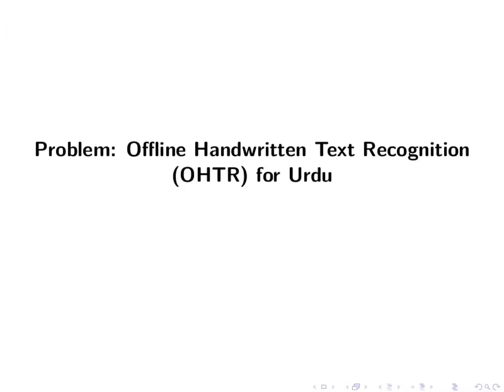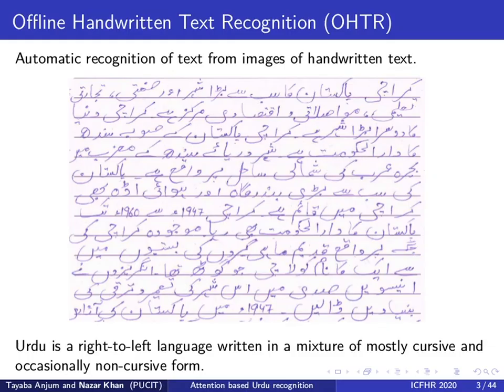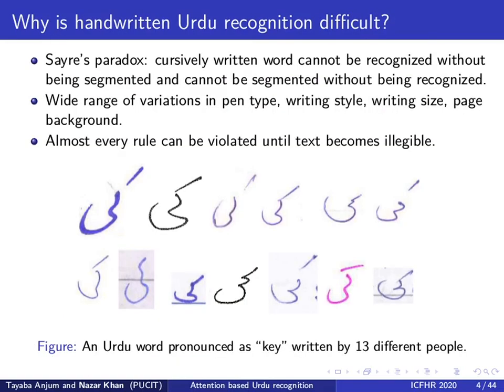Let us begin by describing the offline handwritten text recognition problem for the Urdu language. Offline handwritten text recognition refers to the problem of recognizing handwritten text from an image. We solve this problem for Urdu, which is written from right to left in a mixture of mostly cursive but occasionally non-cursive form. Recognition of Urdu is difficult due to the well-known Sayre's paradox: a cursively written word cannot be recognized without being segmented, and cannot be segmented without being recognized.